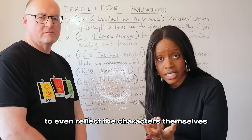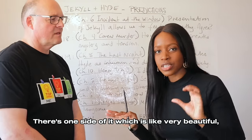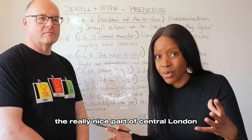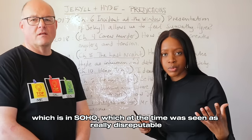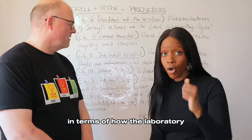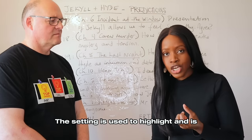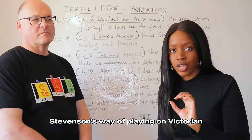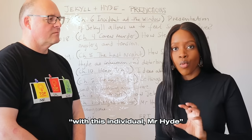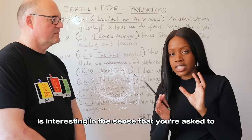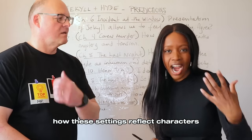For this question, when considering how setting is used, you're invited to think about how pathetic fallacy creates an atmosphere of mystery and tension, and how setting reflects the characters themselves. Consider Dr. Jekyll's own house — it reflects his duality. One side is beautiful, in a really nice part of central London; the other darker side is in Soho, which at the time was seen as really disreputable. The laboratory — which Poole and Utterson are plotting to break into — is used to play on Victorian fears about science: something terrible must be going on in Jekyll's lab.